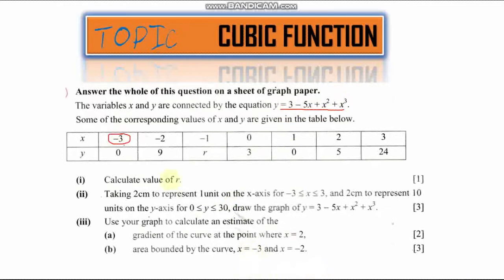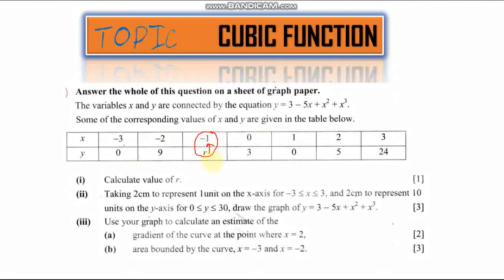For instance, I pick the second column where I've circled. If I insert x equal to negative 3 into this equation and solve for y, I find the value is equal to 0. The first question is saying: calculate the value of r. We use the same concept — the value corresponding to r is negative 1, so we use the general equation to calculate the value for r.